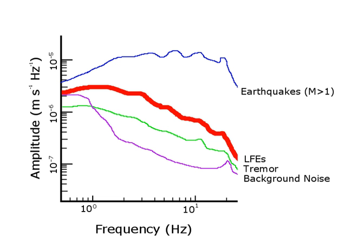A slow earthquake is a discontinuous, earthquake-like event that releases energy over a period of hours to months, rather than the seconds to minutes characteristic of a typical earthquake.